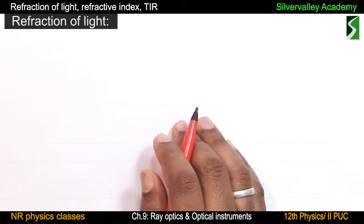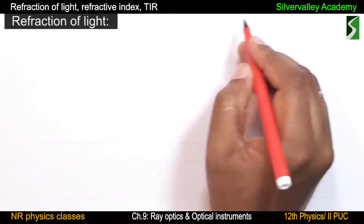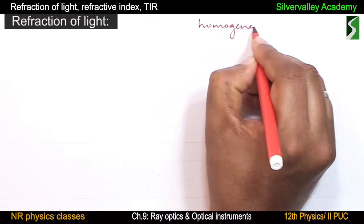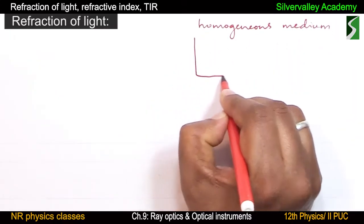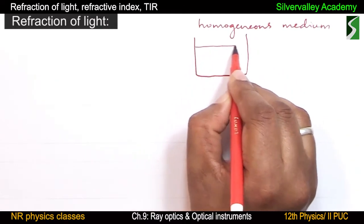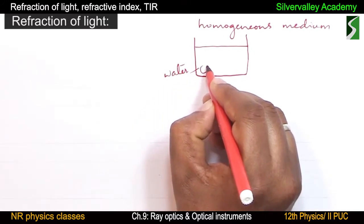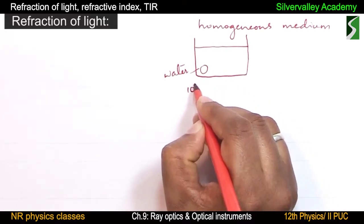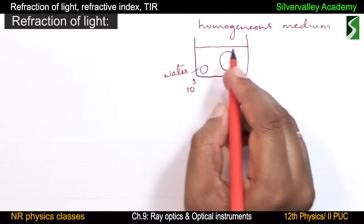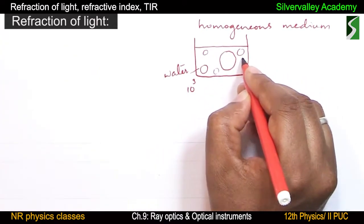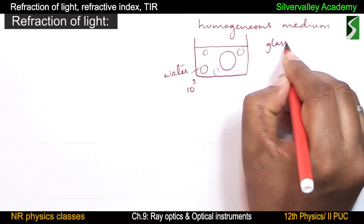Refraction of light is the bending of light when it travels from one homogeneous medium to another homogeneous medium. A homogeneous medium means the density of the medium should be the same throughout. For example, if this is water, whether you consider a small or large volume, the density is 1000 kg per meter cube everywhere. Water is a homogeneous medium; glass is a homogeneous medium.